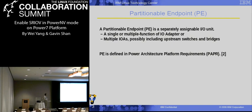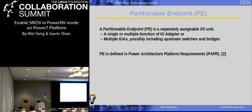First is the concept of positionable endpoints. A positionable endpoint, PE, is a separately assignable I/O unit. It could be a single or multiple function I/O adapter or multiple I/O, possibly including upstream switches and groups. The PE concept is defined in the Power Architecture Platform Requirements, called PAPR, which you can download at power.org. The PE concept is very important on the Power7 platform because in the SR-IOV environment, when we want to give a VF function to the guest, we need to put this virtual function into the PE concept so we can assign it to the guest.